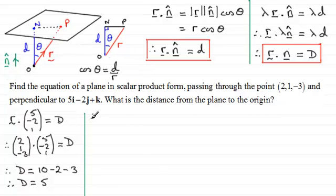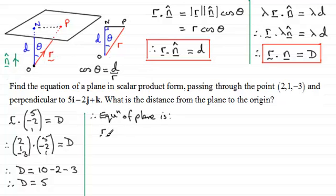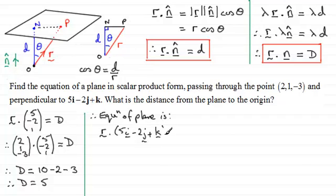Now we know D equals 5. Therefore, the equation of the plane in scalar product form is R dotted with (5i − 2j + k) equals 5. So there's our equation of the plane.